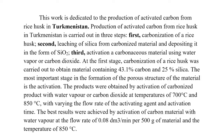This work is dedicated to the production of activated carbon from rice husk in Turkmenistan. Production of activated carbon from rice husk in Turkmenistan is carried out in three steps: first, carbonization of rice husk; second, leaching of silica from carbonized material and depositing it in the form of silicon dioxide; third, activation of the carbonaceous material using water vapor or carbon dioxide.